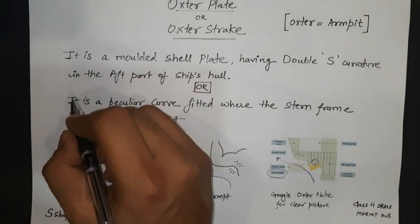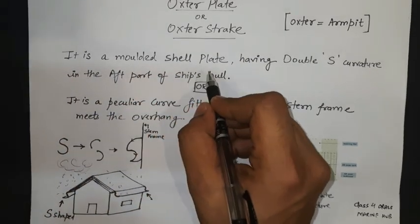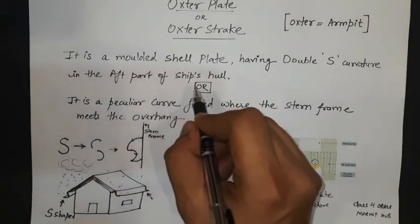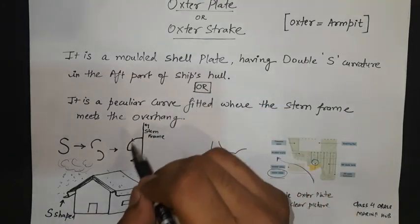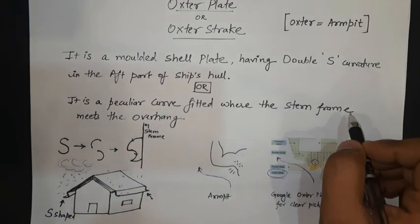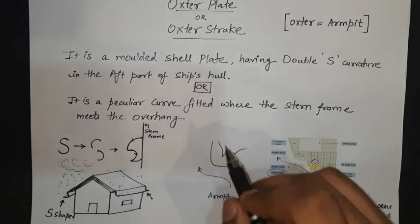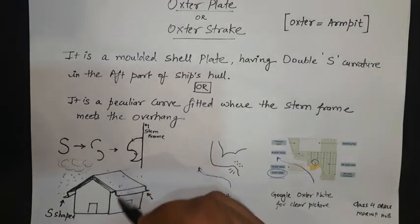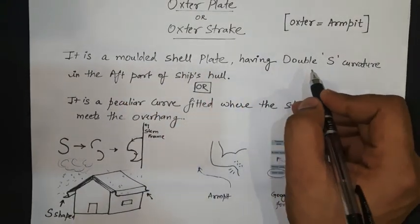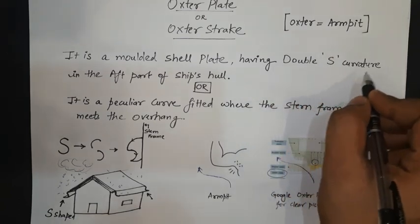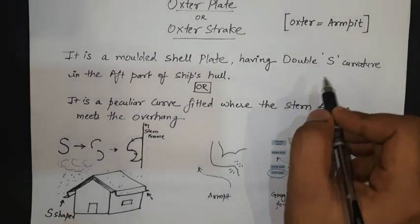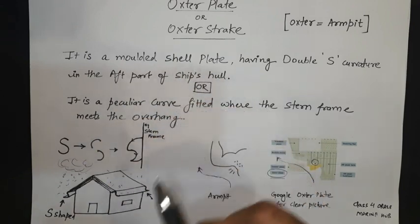In ship construction, the oxter plate definition is: it is a molded shell plate having double S curvature in the aft part of the ship's hull, or it is a peculiar curve fitted where the stern frame meets the overhang. The double curvature makes the shape of an S in the ship's aft part.